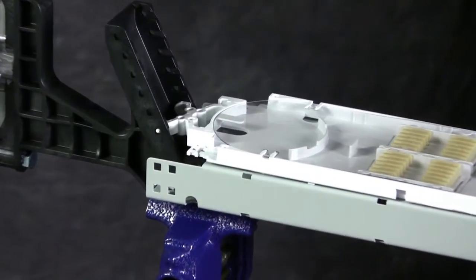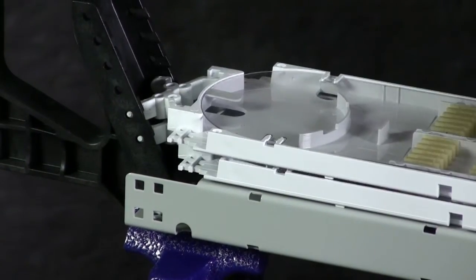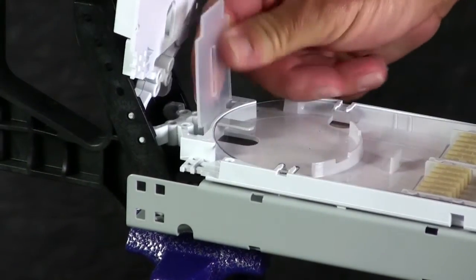For the smaller A and B closures, the splice trays snap into position, and a tray prop is provided.